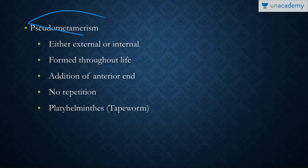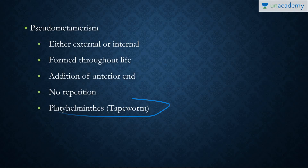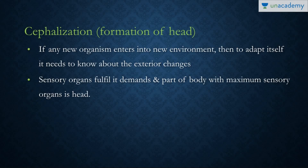Pseudo-metamerism is false metamerism. In this case, the segmentation is either external or internal — not both, as in true metameric segmentation. These segments are formed throughout life, even in the adult stage, and segments are added only to the anterior end. There is no repetition of organs. The example is Platyhelminthes, such as the tapeworm.